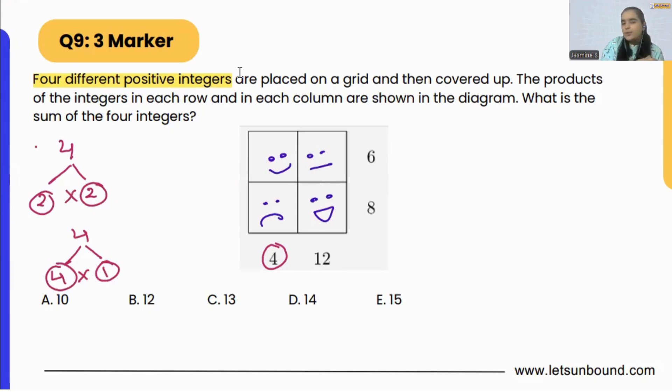So we cannot put two and two in two different boxes, right? Because it is going to be the same. Then we have to put different numbers. That means we can put one and four, because one times four is four.